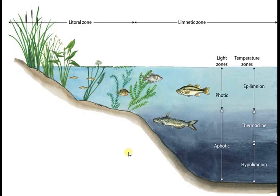What makes them stay in different regions in the pond? Some conditions like availability of different amounts of food, air, light, etc., make them stay in different regions in the pond.